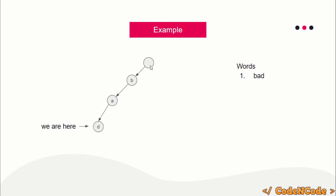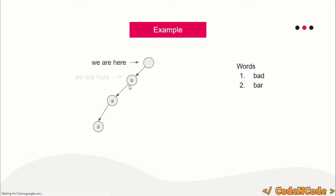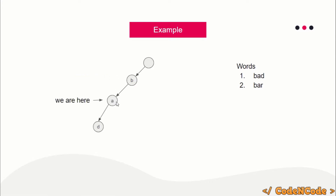Now suppose we want to insert 'bar'. We start from the root, check whether 'b' exists as a child — yes, so we move on. We check whether 'a' exists — yes, it exists, so we move on without creating a new node. From there we check whether 'r' exists — it does not, so we create a new node with 'r' and move on. So 'bar' is now also inserted in the trie.